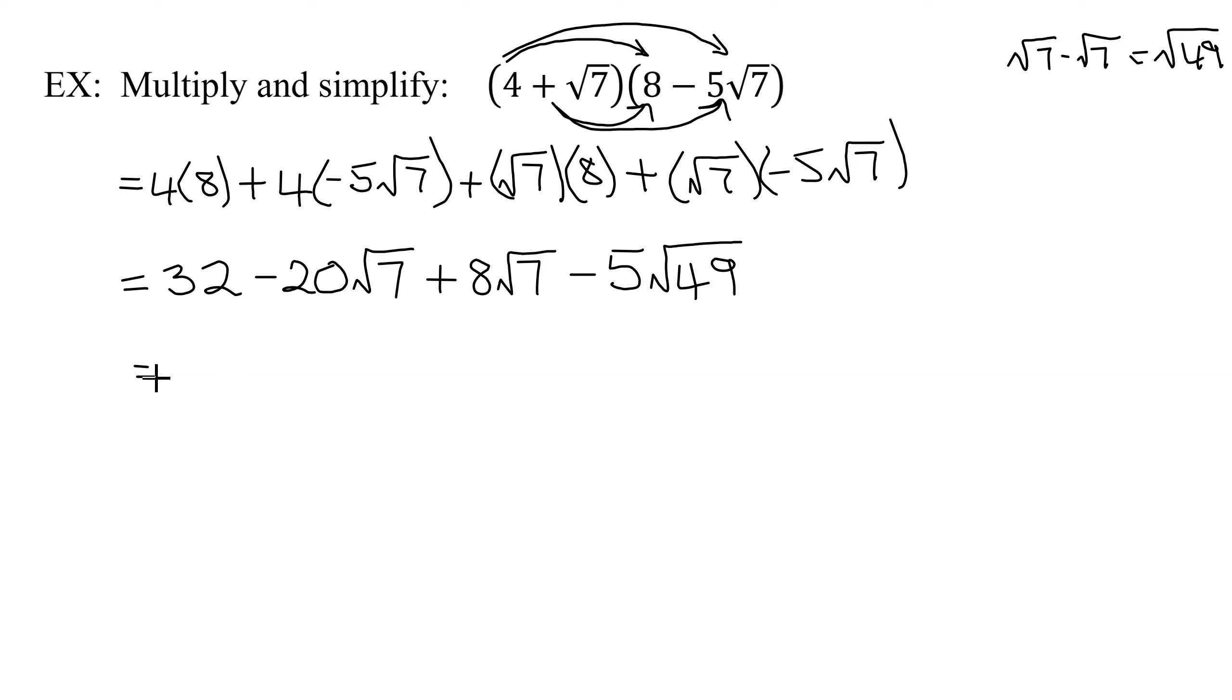So lastly, can we do any more simplification? Well, we have 32. Is this radical the same as this radical? Yes, they're both the square root of 7. So I have like terms, negative 20 plus 8 is negative 12 times the square root of 7.